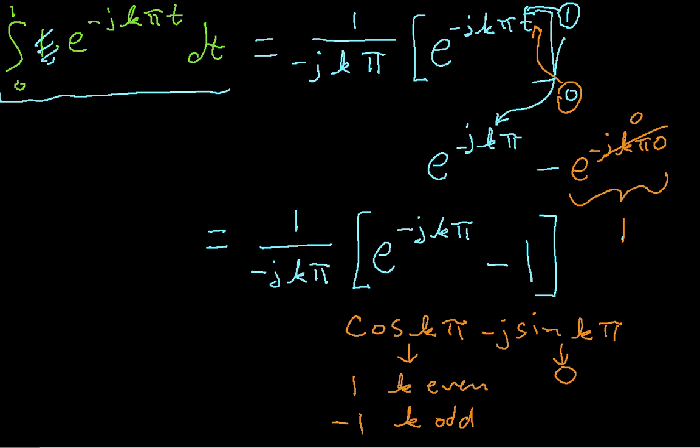Okay, so when k is even, I will have 1 put into here, and I'll have 1 minus 1. So when k is even, I have the situation where this difference is 0. When k is odd, I plug this in here, and I have minus 1 minus 1, which is negative 2.